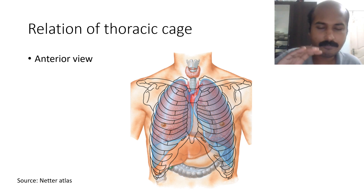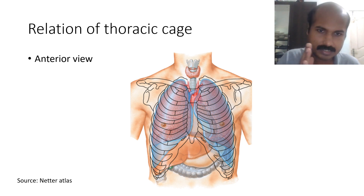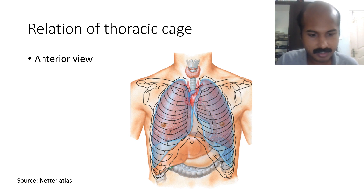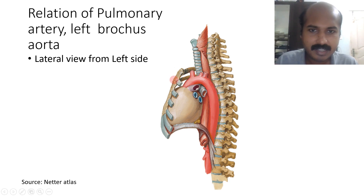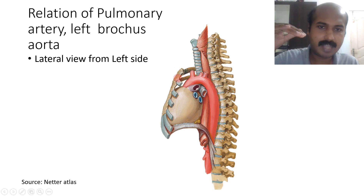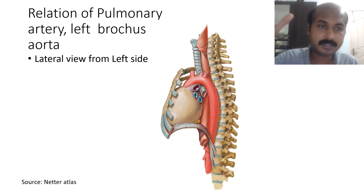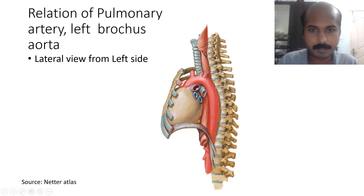The arch of the aorta is almost in the midline but just off the midline towards the left side. Looking at another picture in an atlas gives a better understanding. The manubrium sternum and the sternal angle are visible — the sternal angle level is an important landmark plane used for understanding many thoracic structures.